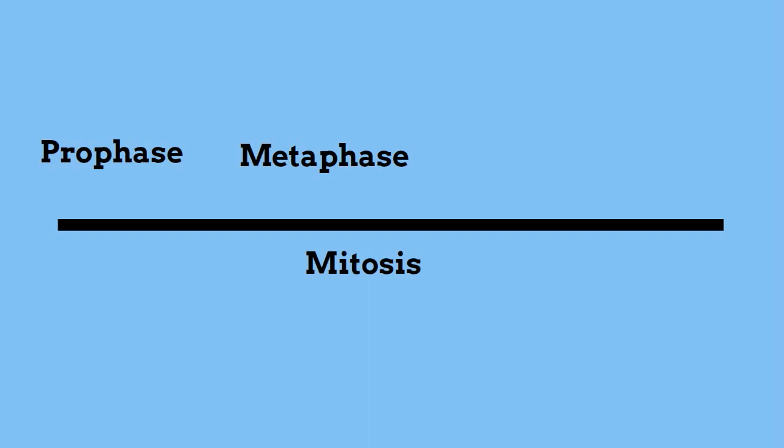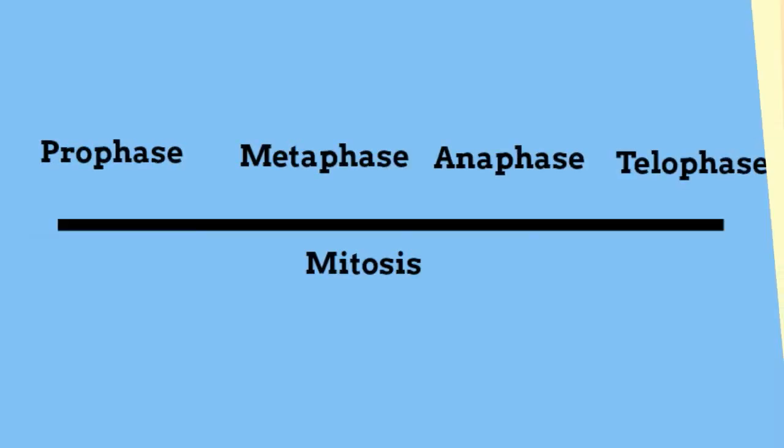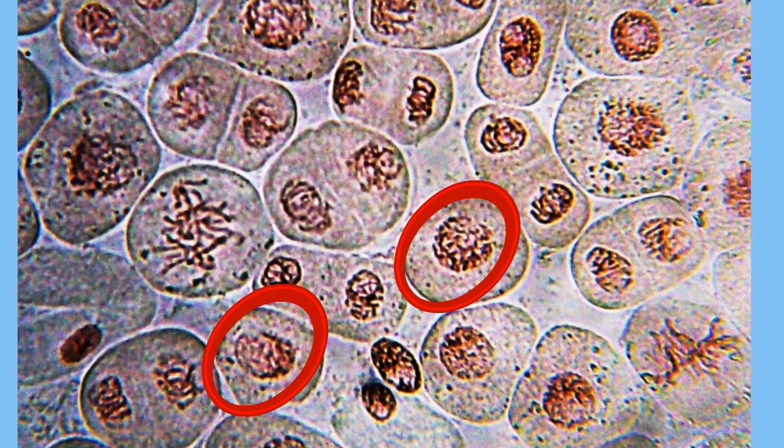Mitosis consists of prophase, metaphase, anaphase, and telophase. Here is what prophase looks like in real life.